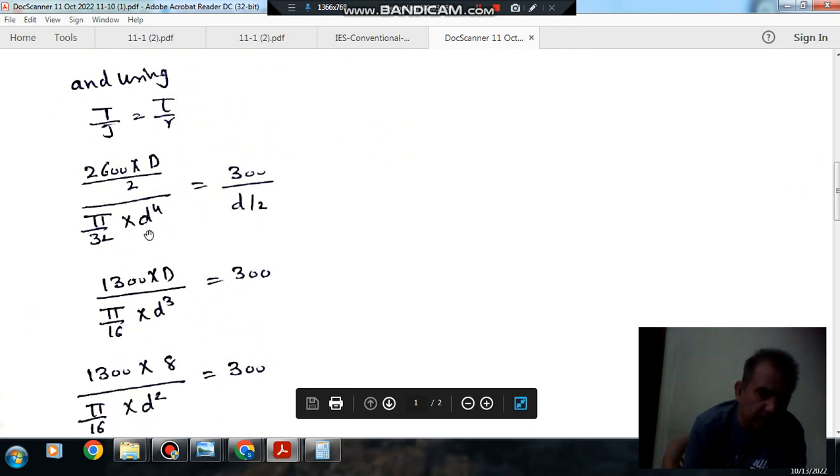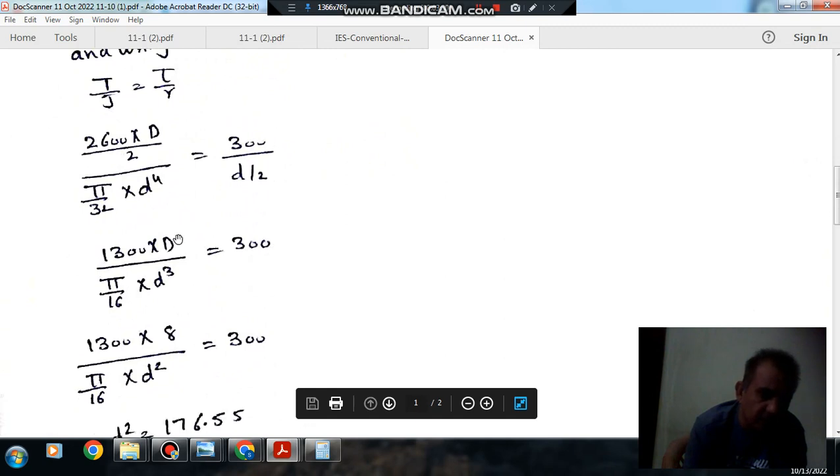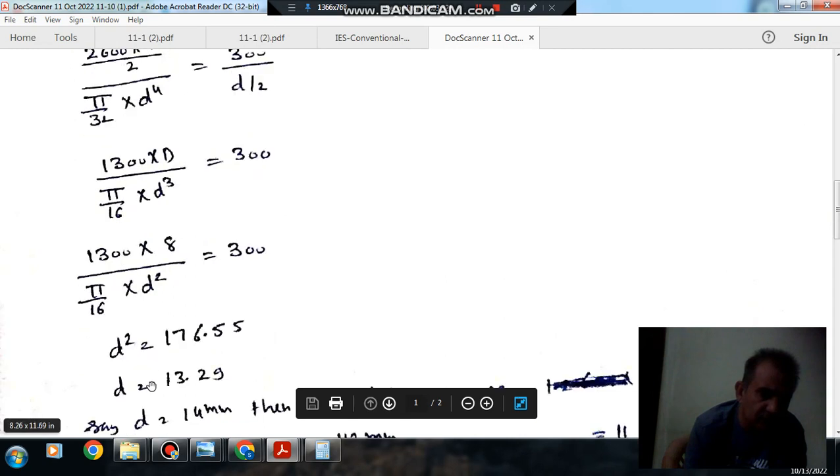From this, we have the equation 2600 D by 2 divided by pi by 32 d to the fourth times d by 2 equals 300. Now D by d is 8, so d cubed will be left. So d comes out as 13.29 mm.